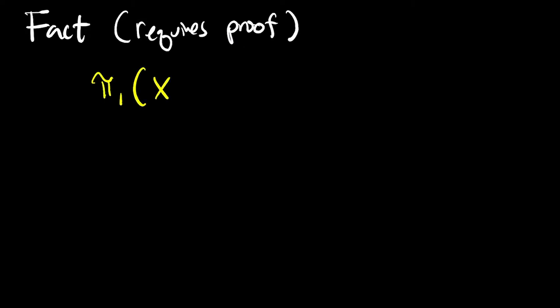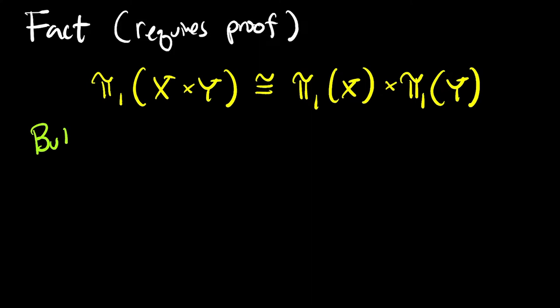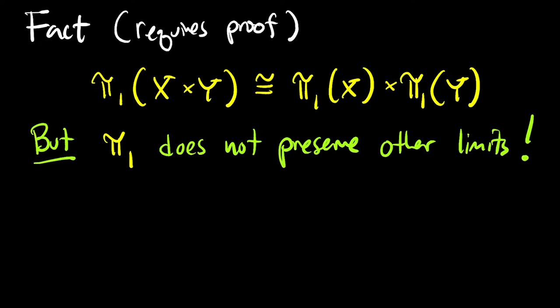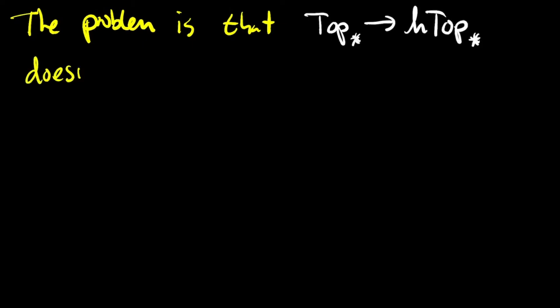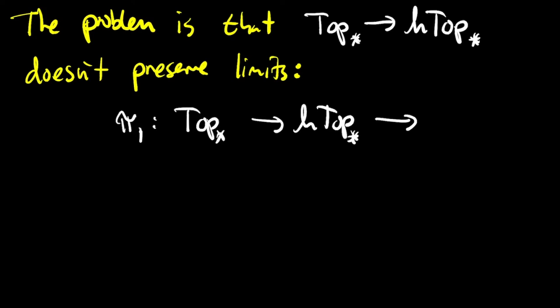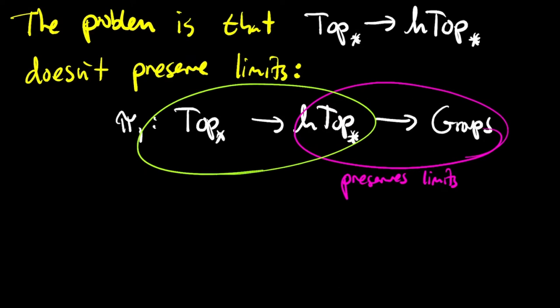So one fact that you can prove, it requires a proof, it doesn't follow from anything I've said so far, is that π₁ preserves products. But π₁ does not preserve all limits in the category of topological spaces. Now, the problem, if you want to call it a problem, is that passing from the category of topological spaces to the homotopy category of topological spaces does not preserve limits. And so if you think of the functor π₁ as being factored first as the functor that sends a space to its representative in the homotopy category, followed by the representable functor represented by the circle S¹, then the second part of that factorization does preserve limits. But the first part of that factorization does not preserve limits.